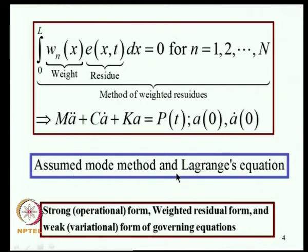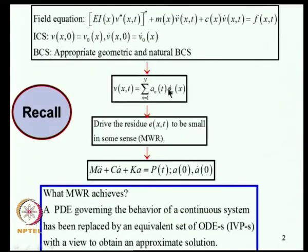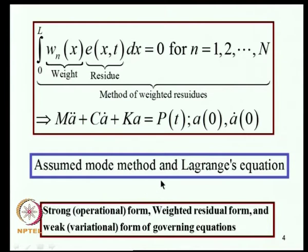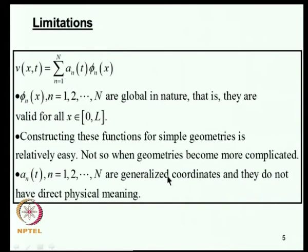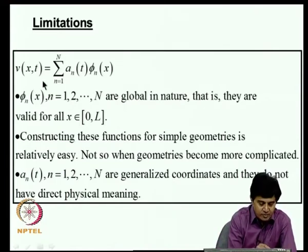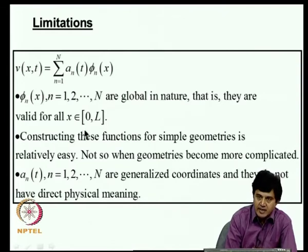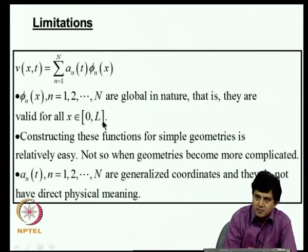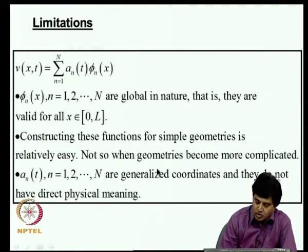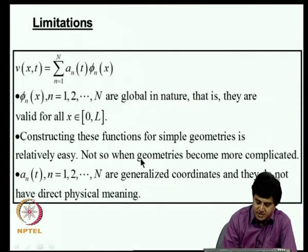We also discussed the assumed mode method, which is suitable for structural dynamic applications: you assume the solution in a certain form and directly work with the Lagrange equation to obtain the governing equations for A(T). Now, what are the limitations? In all these methods the trial functions phi_N(X) are global in nature, valid for all X in [0, L]. For simple geometries the choice is reasonably straightforward, but for complicated geometries or structures built up of line elements, developing global shape functions is not an easy exercise.